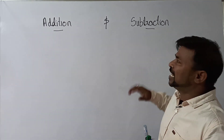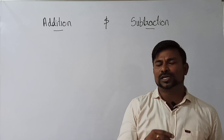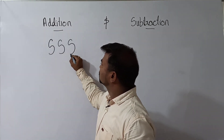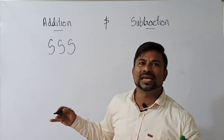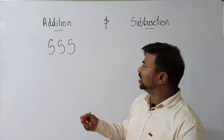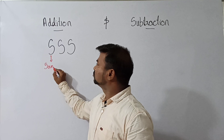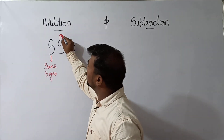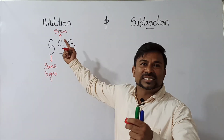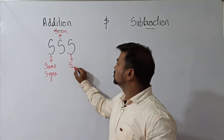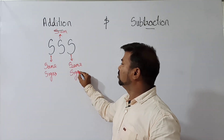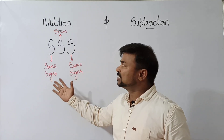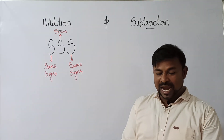The concept is very small — it's addition and subtraction. But before dealing with that, I want to deal with this topic in a different logical way. I want to give a logic called S, S, S for addition. What is that? Same signs. Yes, same signs. The other S stands for sum. Same signs, sum. And the next S: same signs, sum them, and keep the same sign.